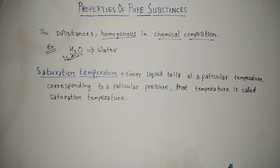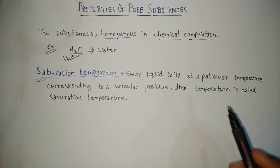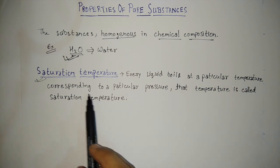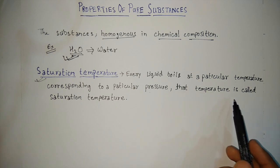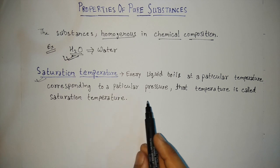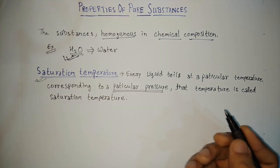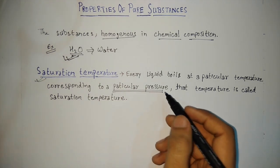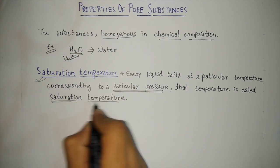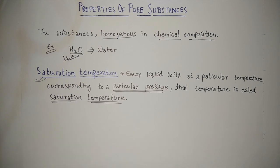Before going further, we should know some definitions. The first one is saturation temperature. For every liquid, a liquid boils at a particular temperature for a given corresponding pressure. That temperature is called saturation temperature, and the pressure at which it is boiling is known as saturation pressure.